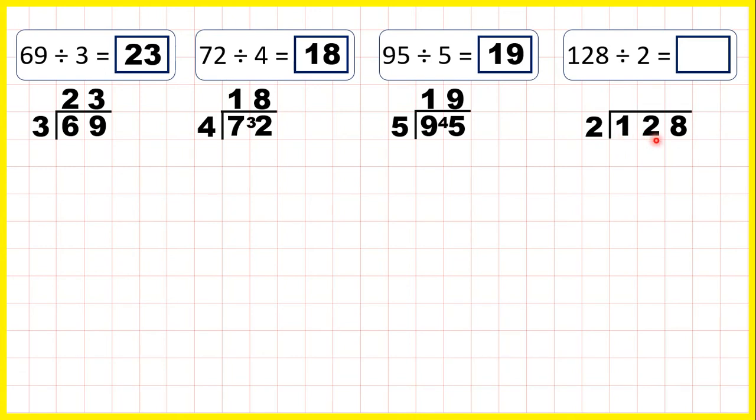So we can take 12, and divide 12 by 2. That's exactly 6, because 6 times 2 is 12, so we don't have a remainder here. So we just need to divide 8 by 2. That's 4, because 4 times 2 is 8, so our answer is 64.